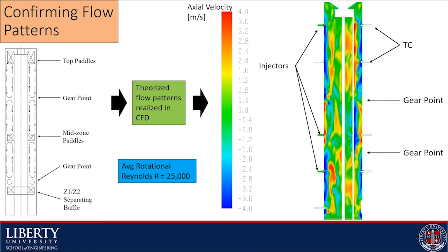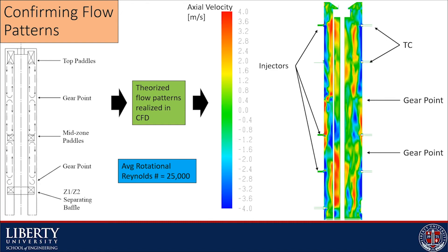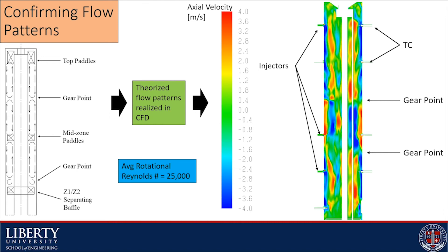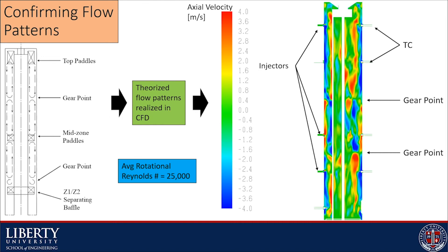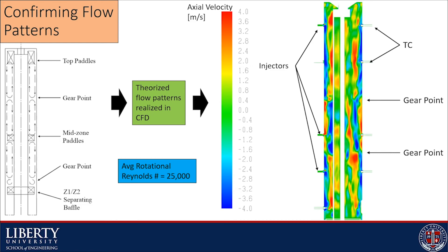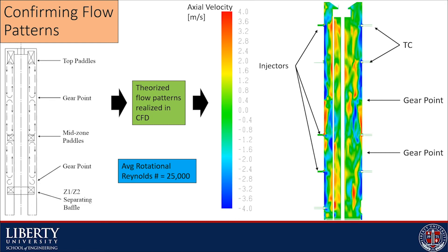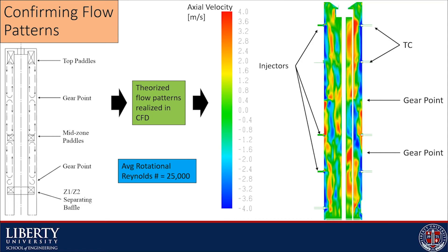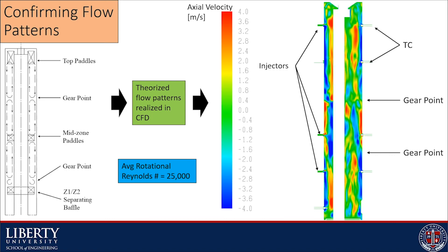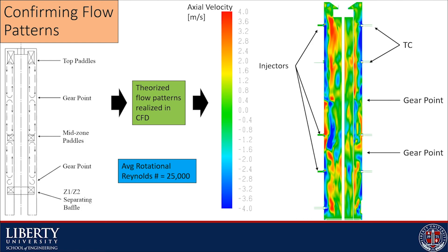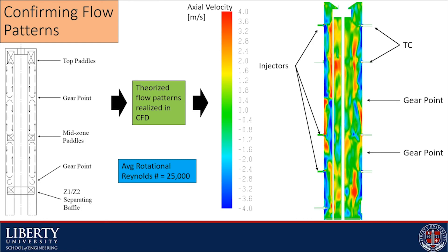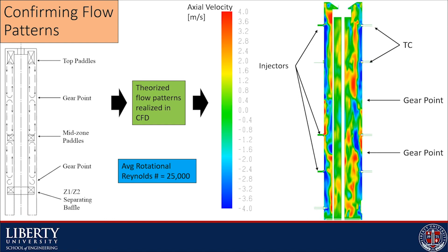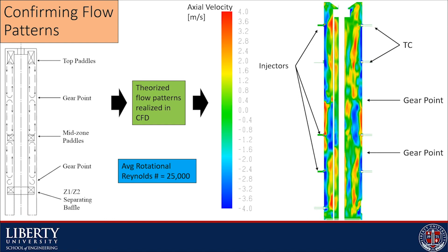Along with reaction rates, the internal flow patterns play a big role in the temperature distributions within the model. Theorized flow patterns for reactors using similar geometries show the existence of a flow phenomenon called a gear point. A gear point occurs where two flows meet and invert the direction of each other, behaving similar to one gear rotating an adjacent gear in an opposite angular direction. When dealing with turbulent flows such as this model, which has an average rotational Reynolds number of 25,000, we were unsure as to whether or not this behavior would be seen. The axial velocity animation shown demonstrates the existence of gear points within the CFD model in zone 1. The blue downward stream meets a red upward stream and they invert each other at two locations within this zone, helping affirm that the current state of the model is approaching realistic results.